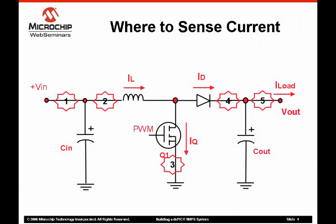In this boost converter example, we show the possible locations where current can be measured in an SMPS circuit and the associated advantages and disadvantages for each choice. At location 1, measuring average input current has little benefit. At location 2, measuring inductor current is very useful in current mode control, but the high common mode voltage at this node requires circuitry for level shifting for use by the controller. At location 3, peak inductor current can be measured just before the transistor is turned off, and this location has the advantage that this node is close to ground potential, which minimizes current sense circuitry complexity.